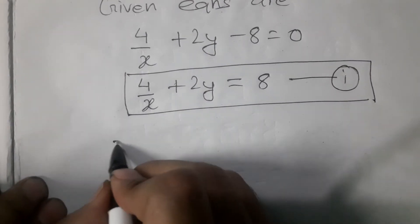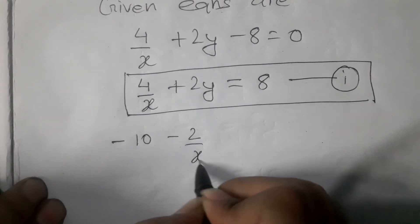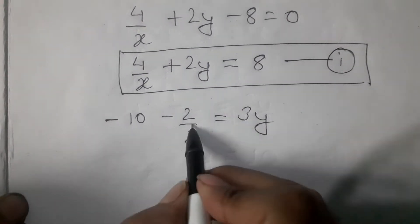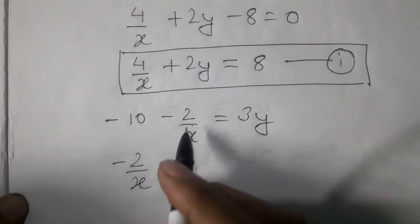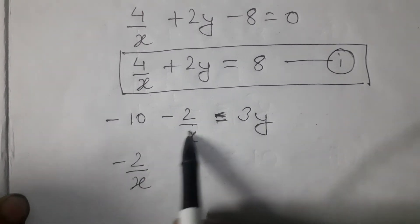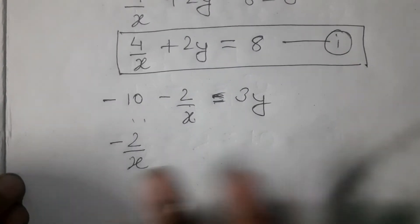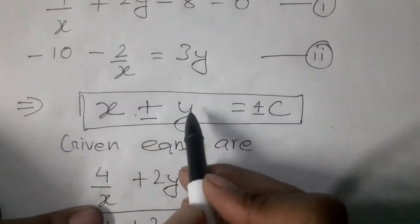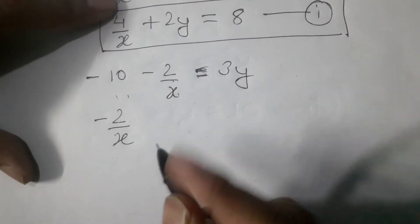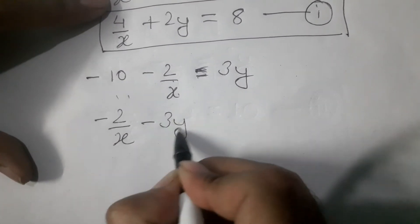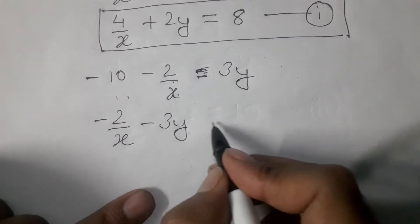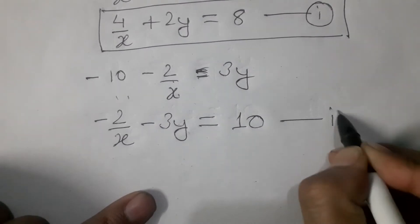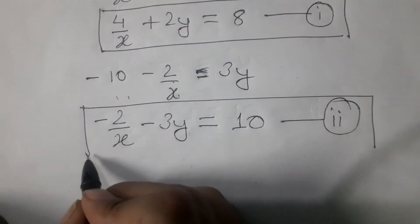Similarly, equation 2 is equal to 3y. This is the proper order. Now the position can be changed — 3y will move to the left side, because the rule is y goes to the side. The x is equal to the side. It will change to the side. Equation 2 sign changes: 10 is equal to 10, so this is in proper order.